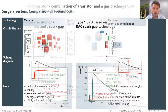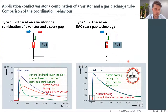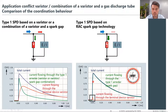A test conducted in DEN's laboratory in Germany compared coordination of different SPD component types. A Type 1 SPD based on a varistor and spark gap was injected with a total of 1.25 kA. The green graph shows total current flowing through the spark gap to ground, while the red graph shows current passing through to the terminal device — which was far too high for the device to withstand. With the new Rapid Arc Control spark gap technology, most of the current was directed via the SPD to ground, with only a small amount of residual energy reaching the terminal device.